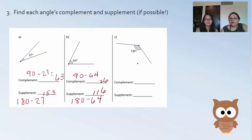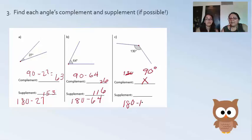Our third angle is 130 degrees. There is no complement because the complement equals 90 degrees and 130 is already greater than 90. There is a supplement, however: 180 minus 130 equals 50. So remember, complements are angles that equal 90 and supplements are angles that equal 180.